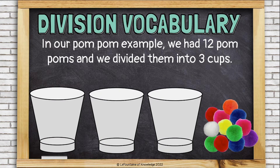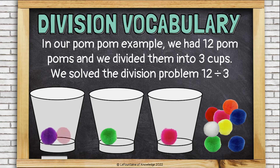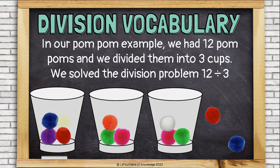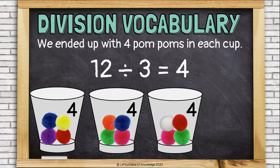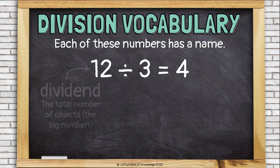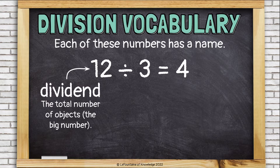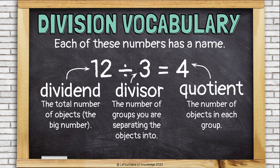In our pom-pom example, we had 12 pom-poms and we divided them into three cups. We solved the division problem 12 divided by 3. We ended up with four pom-poms in each cup, so 12 divided by 3 equals 4. Each of these numbers has a name. The dividend is the total number of objects — the big number. The divisor is the number of groups you're separating the objects into, and the quotient is the number of objects in each group — it's the answer.